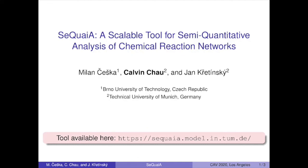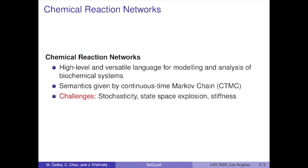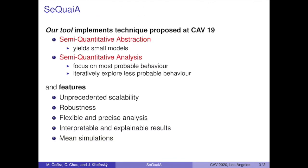SEQUIRE is a scalable tool for semi-quantitative analysis of chemical reaction networks. Chemical reaction networks are a high-level and versatile language for modeling and analysis of biochemical systems. The semantics is given by continuous-time Markov chains. The analysis is challenging because of the probabilistic behaviors of the systems, state-space explosion, and great differences between the rates. SEQUIRE deals with these challenges by implementing the semi-quantitative abstraction and analysis proposed at CAV 2019. The abstraction yields small models easy to analyze, and the analysis focuses on the most probable behavior, iteratively exploring less probable behavior. The tool features unprecedented scalability, robustness, flexible and precise analysis, yields interpretable and explainable results, and introduces mean simulations to capture typical system behaviors.